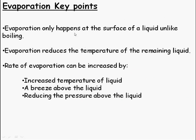So, evaporation key points. Evaporation only happens at the surface of a liquid, unlike in boiling, which happens throughout. Evaporation reduces the temperature of the liquid that remains. We've seen why, because the high-energy molecules are the ones that go, and you're left behind with the lower-energy, cooler molecules. And you can increase the rate of evaporation by increasing the temperature of the liquid, having a breeze blowing across the surface of the liquid, so that's blowing on your hot tea, and reducing the pressure above the liquid also makes it easier for evaporation to take place. Okay, I hope you found this useful. Please make comments in the comments section below the video.